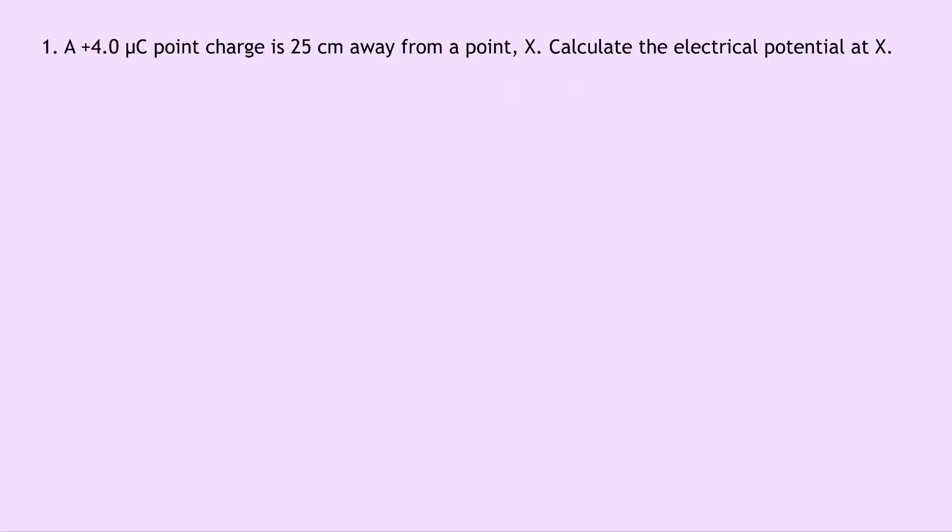Question one says that a plus 4 microcoulomb point charge is 25 centimeters away from a point X. Calculate the electrical potential at X. Well, writing down what we know from the question, we're trying to find V. We know that Q is 4.0 times 10 to the minus 6 coulombs, epsilon naught is 8.85 times 10 to the minus 12 farads per meter, and the distance r is 25 centimeters, which is the same as 0.25 meters.